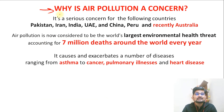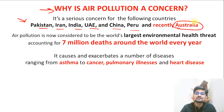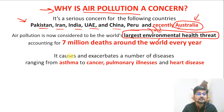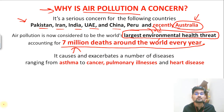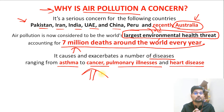Why is it a serious concern? It is a serious concern for countries like Pakistan, Iran, India, UAE, China, and Peru - mostly referred to as developing countries or third world nations. Recently even Australia has joined because of wildfires. Air pollution is now considered to be the world's largest environmental health threat, yet this is not being talked about every day. Seven million deaths around the world every year happen because of air pollution. It causes and exacerbates diseases from asthma to cancer to pulmonary illness to heart disease - impacting our health and the entire ecosystem.